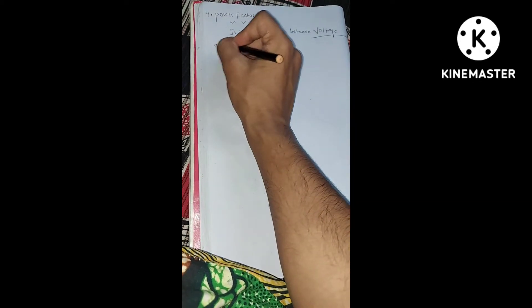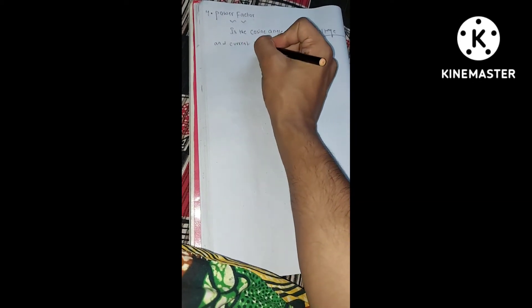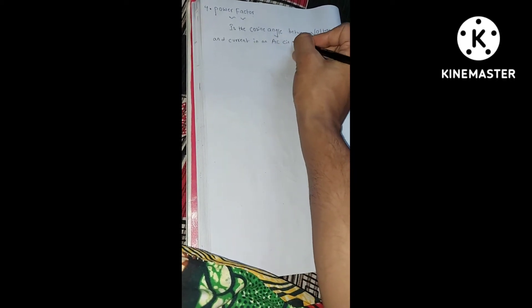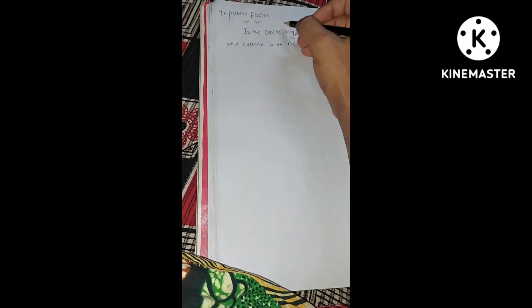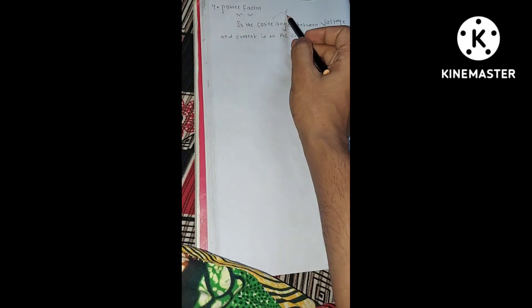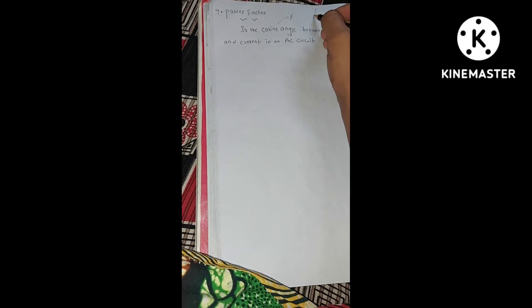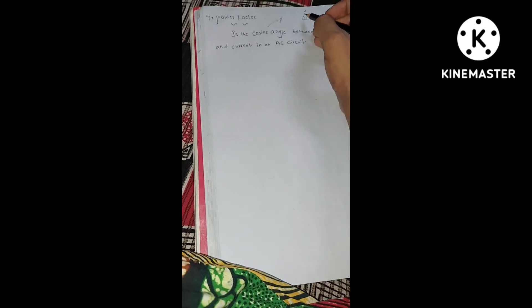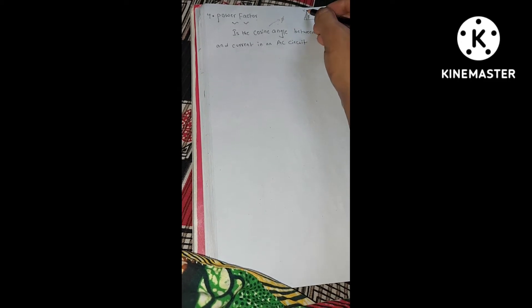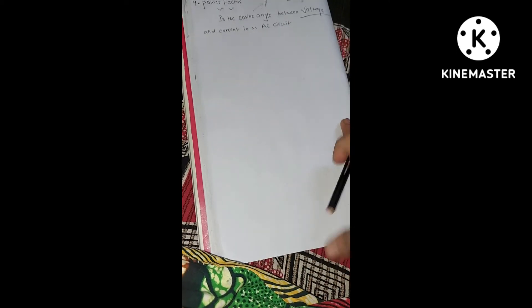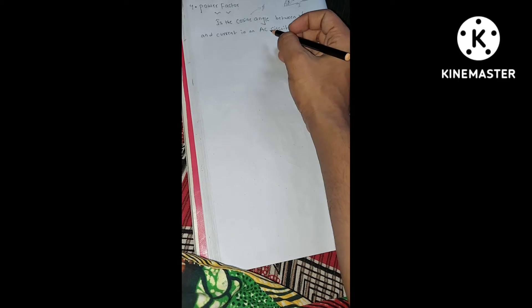What does this statement mean? Basically, it is the cosine angle — represented as phi — between the voltage and current in an AC circuit. For example, in an AC circuit, this cosine angle is between your voltage V and current I. This cosine angle is your power factor.